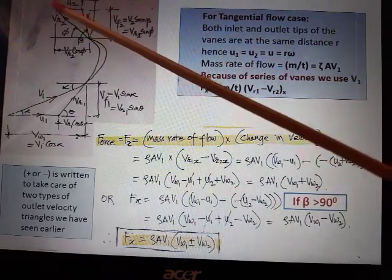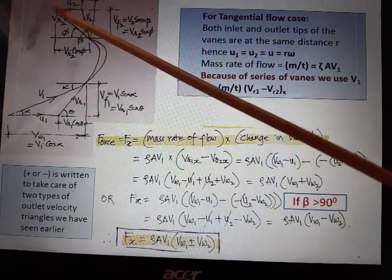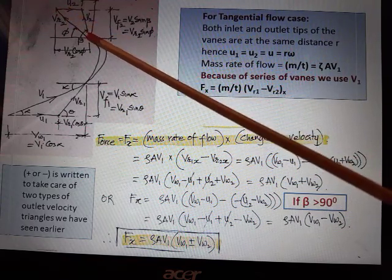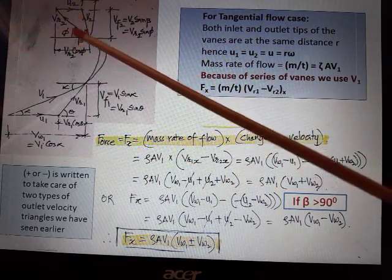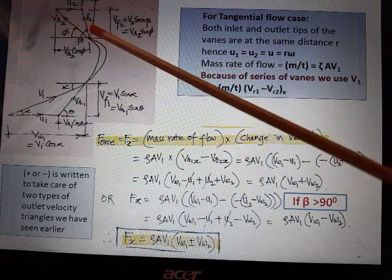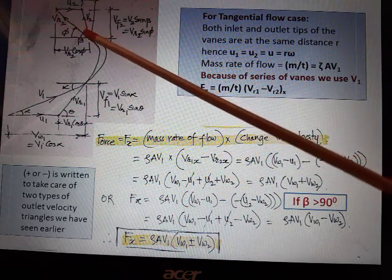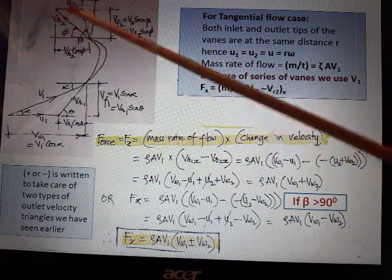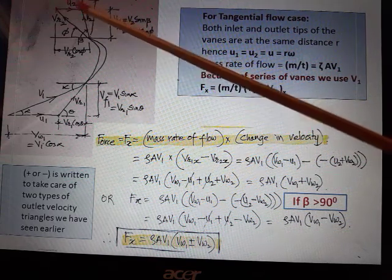Coming to the outlet velocity triangle, Vr2 is this, Vr2x is that way, it is left towards, that's why it should have negative sign. It can be calculated as sum of u2 plus this distance, and this is nothing but Vw2.